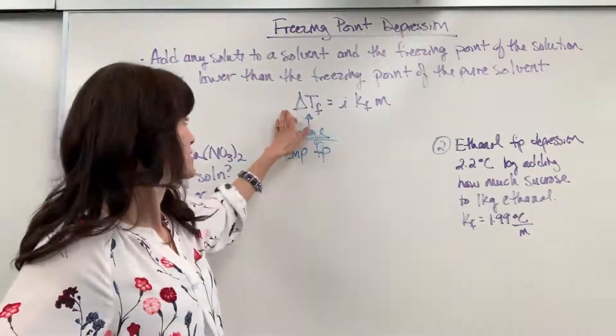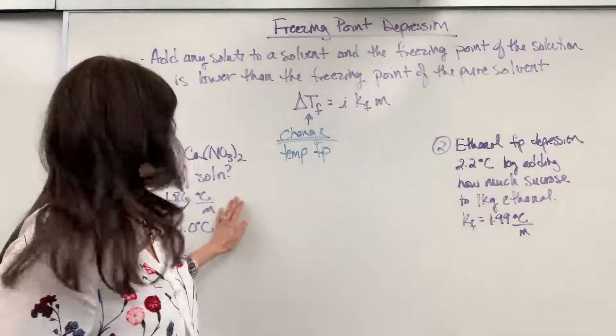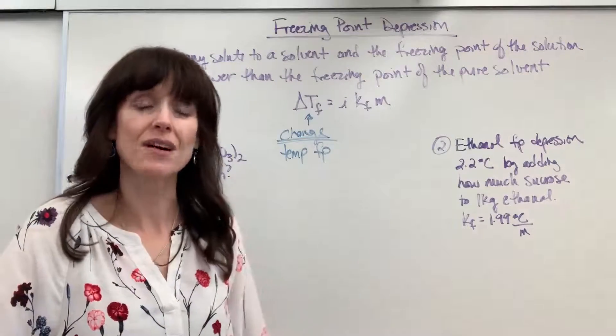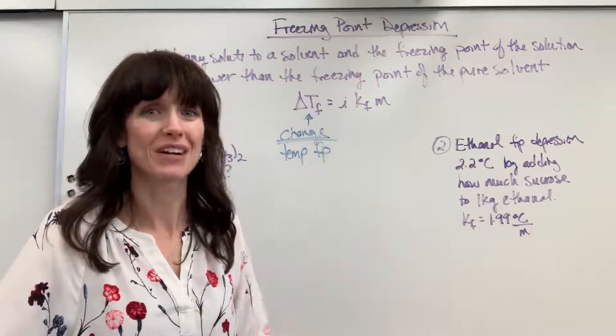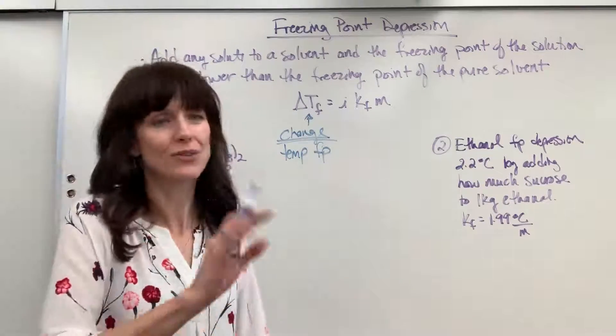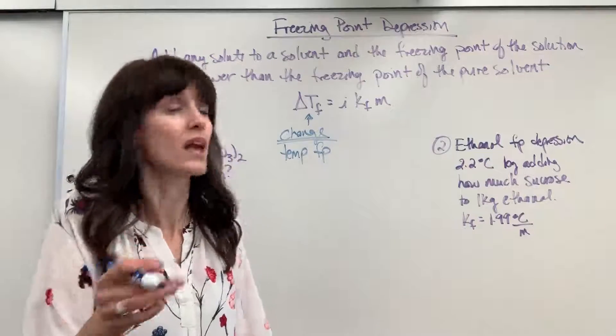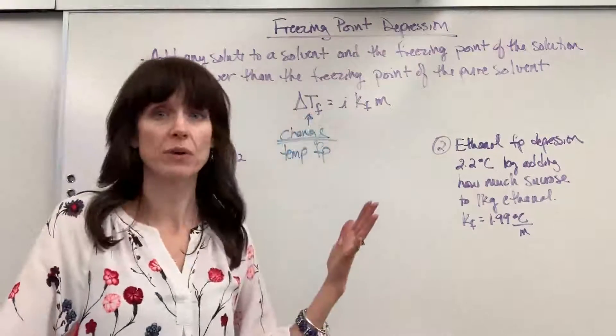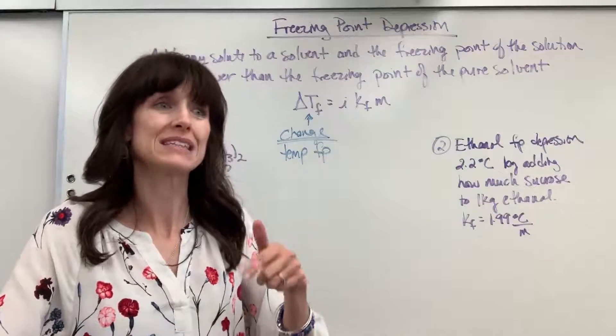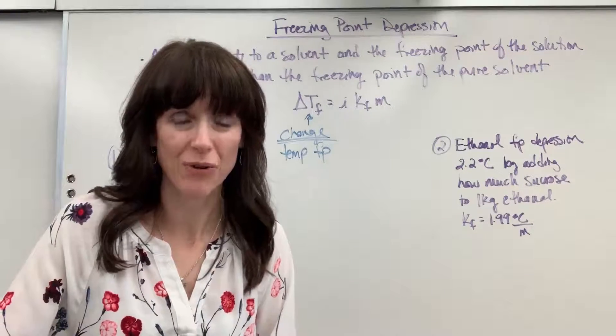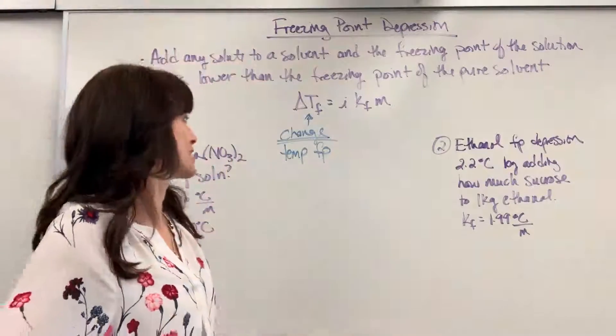So whatever I get for delta T, if I'm using water right here, that means I have to subtract that from zero degrees. So it's telling me the change, how much lower the temperature is. Be careful on that. You can totally see the mistakes that students will make. They'll get this answer. It'll be like 5.5. So they circle it. But it's actually the new temperature, the new freezing point is negative 5.5 for water. It goes down. So be really careful that's changed.